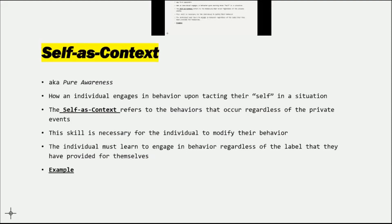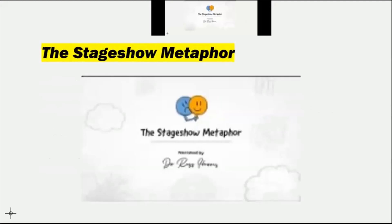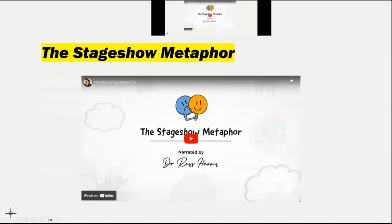This particular skill is necessary for the individual to modify when they're engaging in more problematic private events. The individual must learn to engage in behavior regardless of the label they've provided for themselves. For example: if they're laying on the bed without moving and they refer to themselves as lazy versus them getting up from the bed and going for a run regardless of what they've labeled themselves. Even though a person labels themselves as lazy, they can still acknowledge that label and yet get up and go for a run to experience that particular activity.